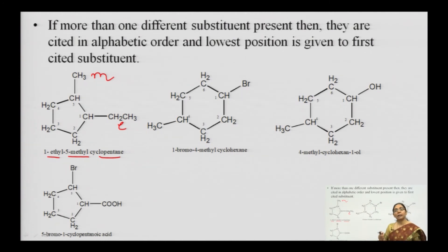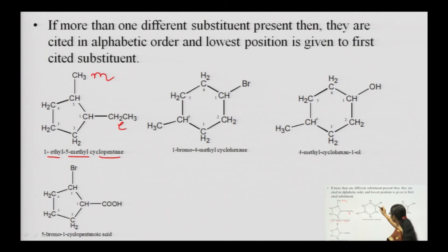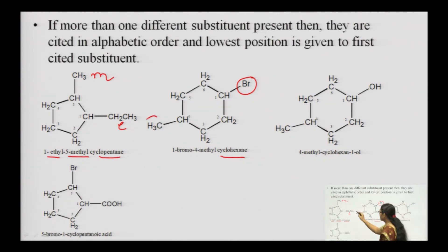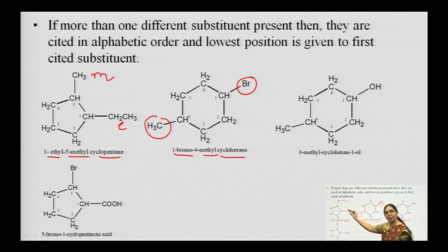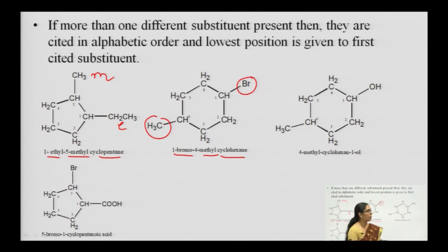When substituents have different priorities, the one with the highest priority receives the lowest possible number. For example, a 6-carbon cyclohexane ring with a bromine and a methyl group: bromine has higher priority than methyl, so bromine is numbered 1. The name is 1-bromo-4-methylcyclohexane.